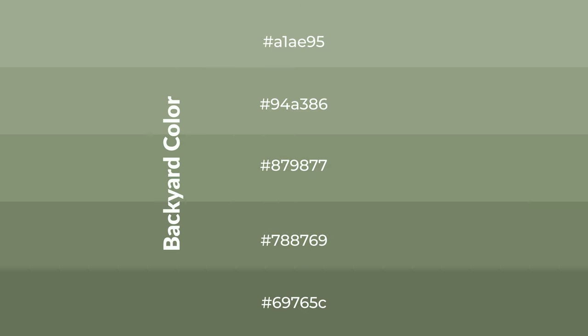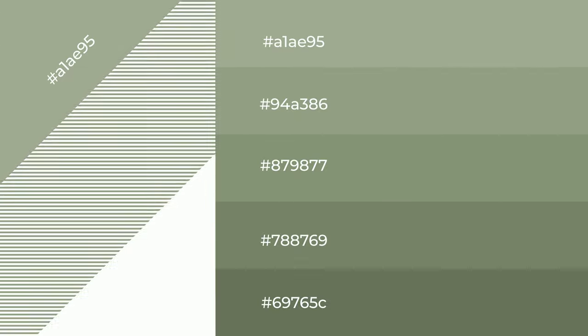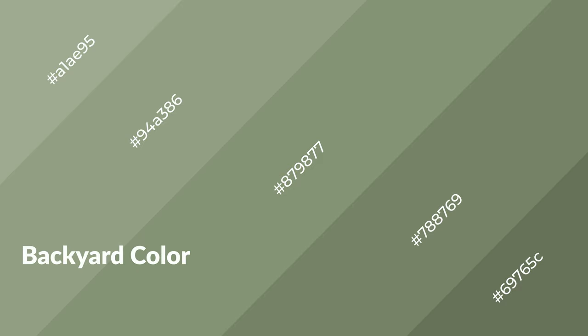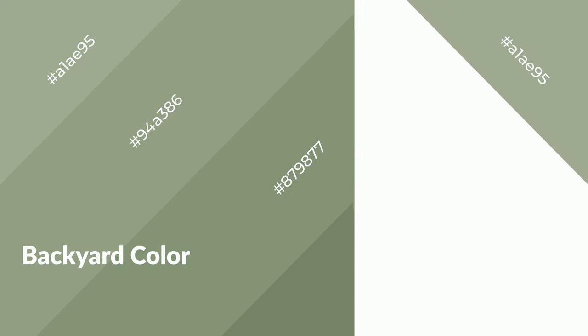To generate shades of a color, we add black to the color, and it is used in patterns and 3D effects. Layers and shades create depth and drama. Blue is a cool color and it emits calming, serene, soothing, refreshing, spacious, unwinding, peaceful, and relaxed emotions.